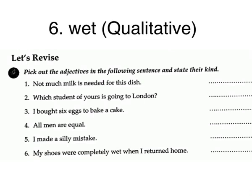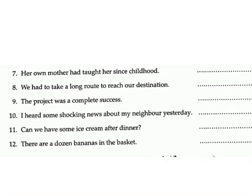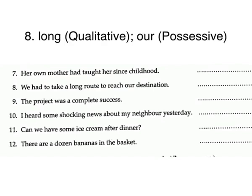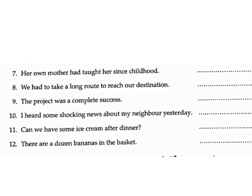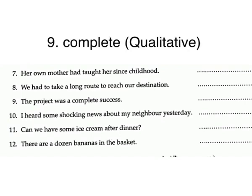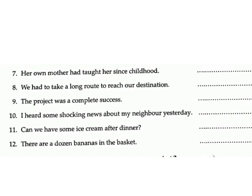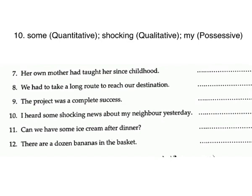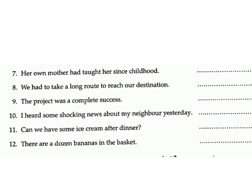4. 'All men are equal.' Answer: all — quantitative. 5. 'I made a silly mistake.' Answer: silly — qualitative. 6. 'My shoes were completely wet when I returned home.' Answer: wet — qualitative. 7. 'Her own mother had taught her since childhood.' Answer: own — possessive. 8. 'We had to take a long route to reach our destination.' Answer: long — qualitative; our — possessive. 9. 'The project was a complete success.' Answer: complete — qualitative. 10. 'I heard some shocking news about my neighbor yesterday.' Answer: some — quantitative; shocking — qualitative; my — possessive.